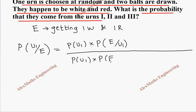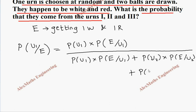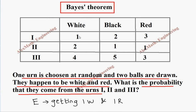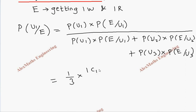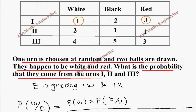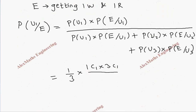The total probability in the denominator is P(U1)·P(E|U1) + P(U2)·P(E|U2) + P(U3)·P(E|U3). Since there are three urns, the probability of choosing each is 1/3. For P(E|U1): 1 white comes from 1 white ball and 1 red comes from 3 red balls in urn 1, giving 1C1 × 3C1. The total balls in urn 1 is 1+2+3 = 6, so we divide by 6C2.